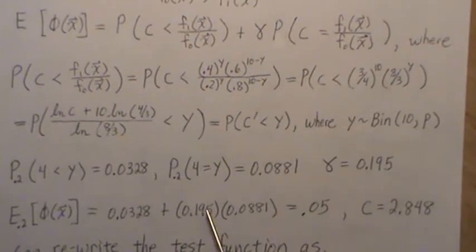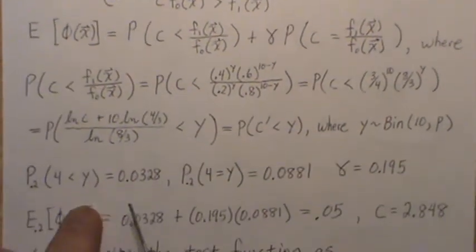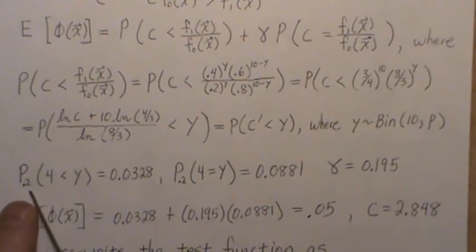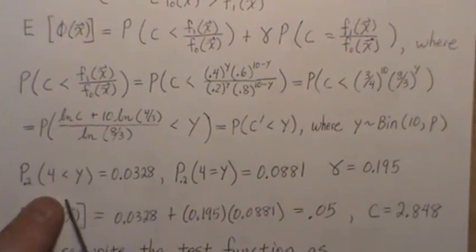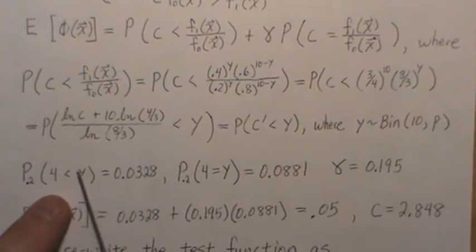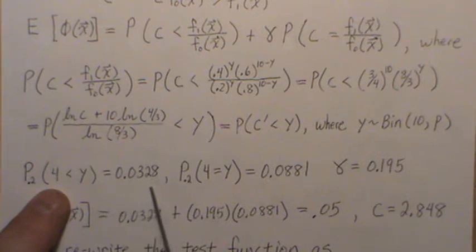Now since we want to find alpha 0.05, we have to assume the null hypothesis is true. So you can look at a table or use the R software. The probability that Y is greater than 4 is 0.0328.